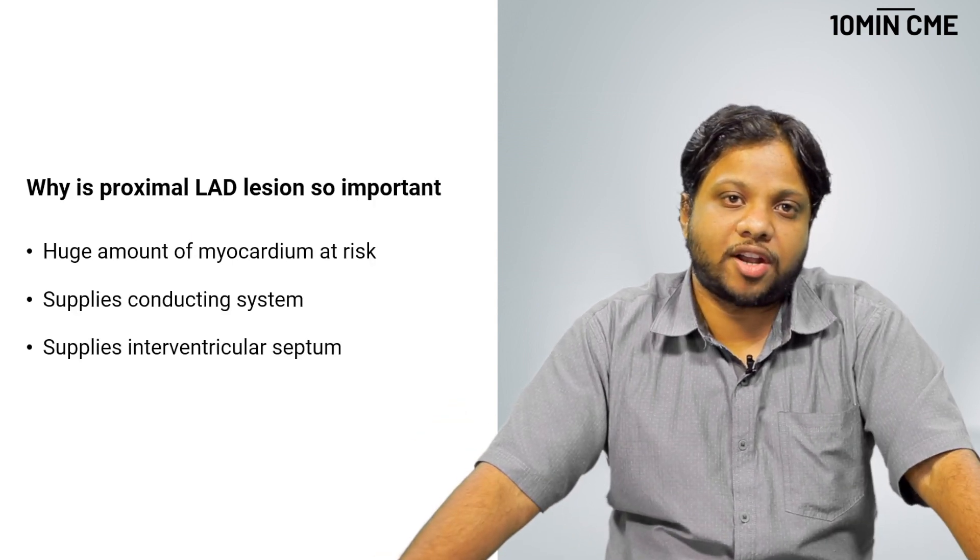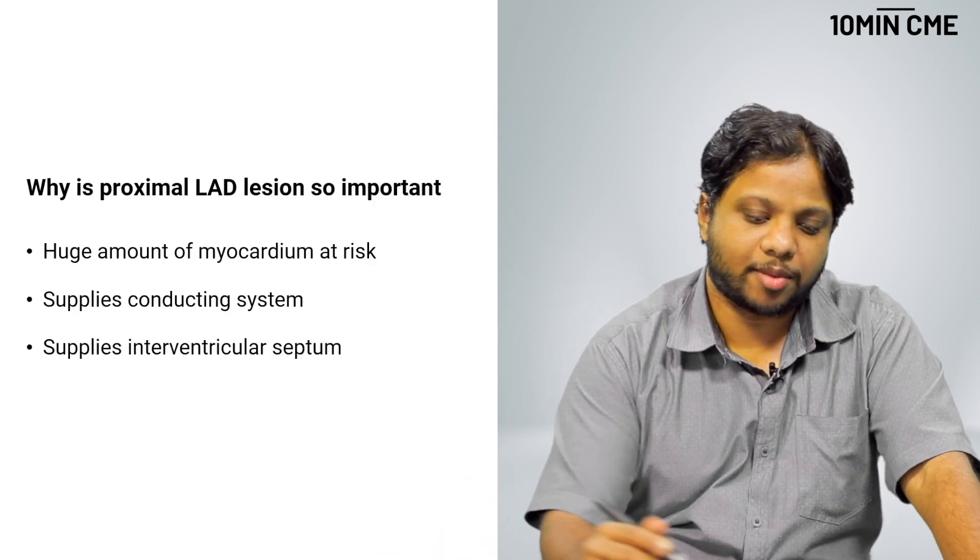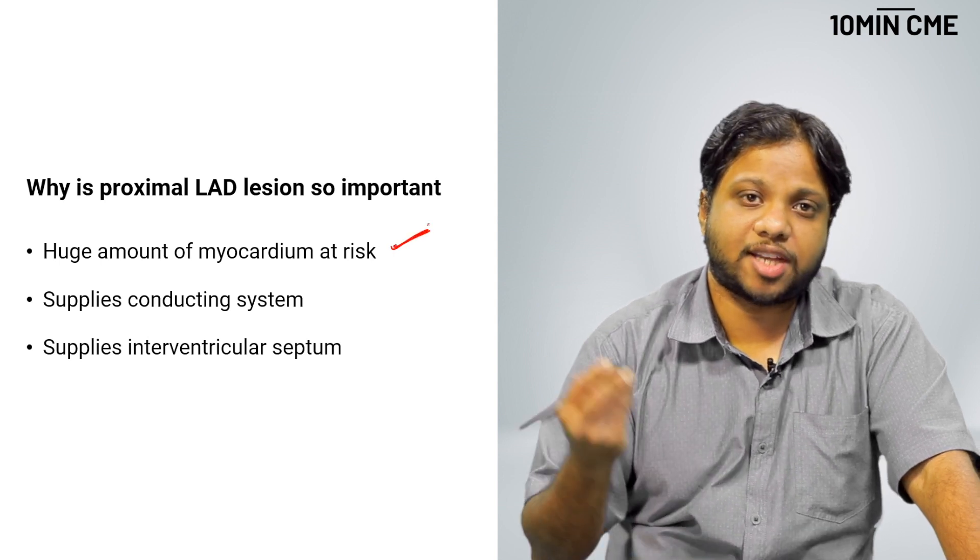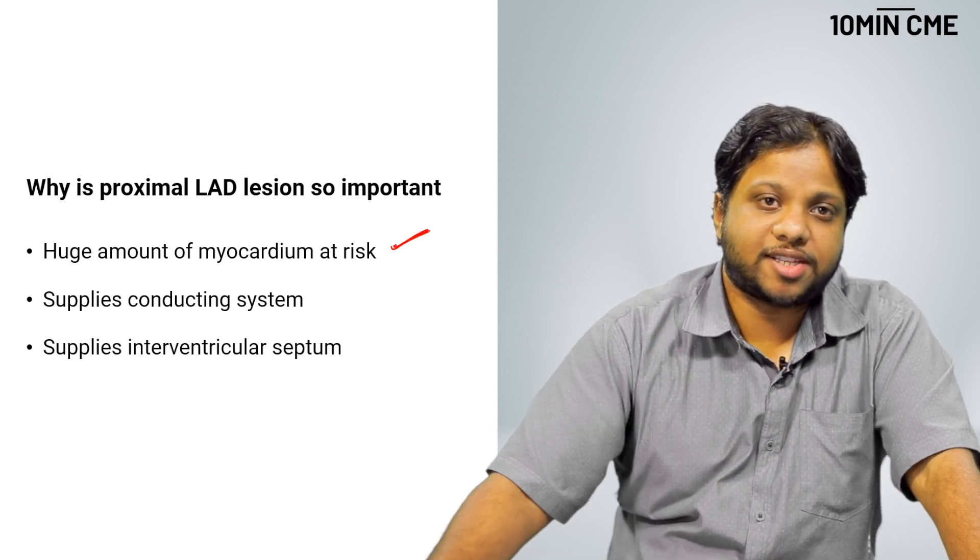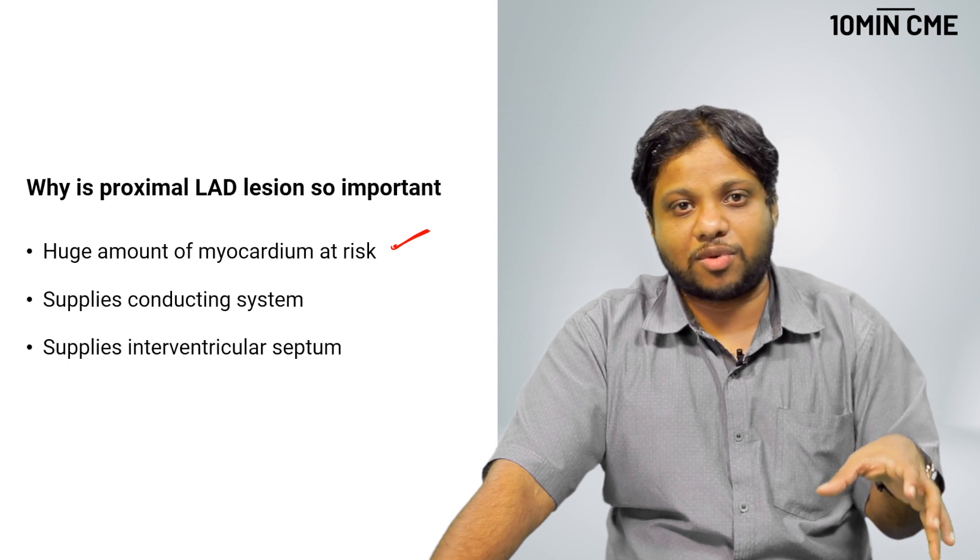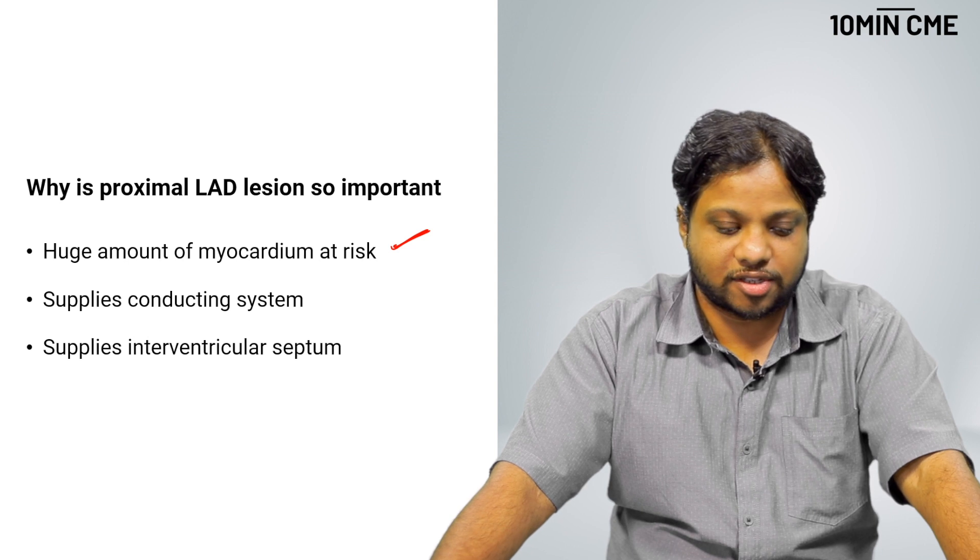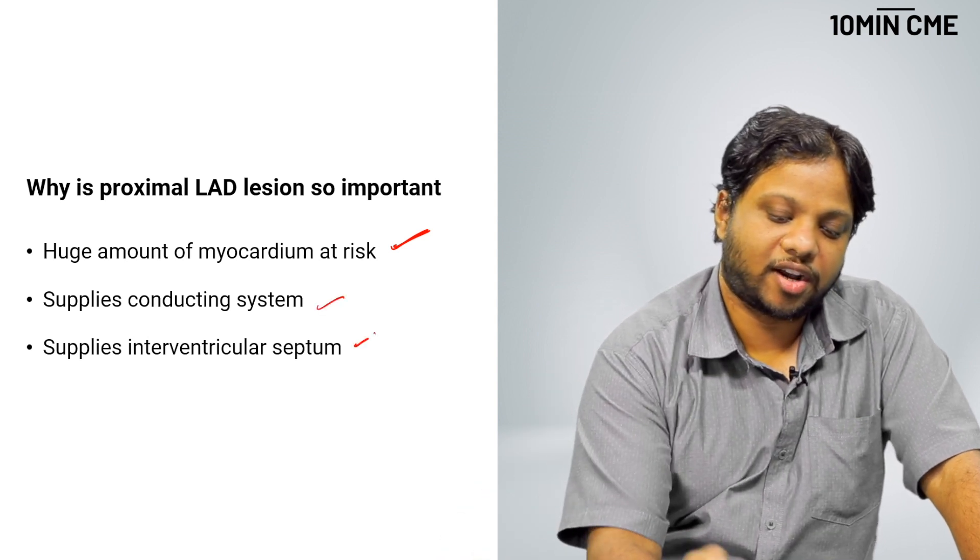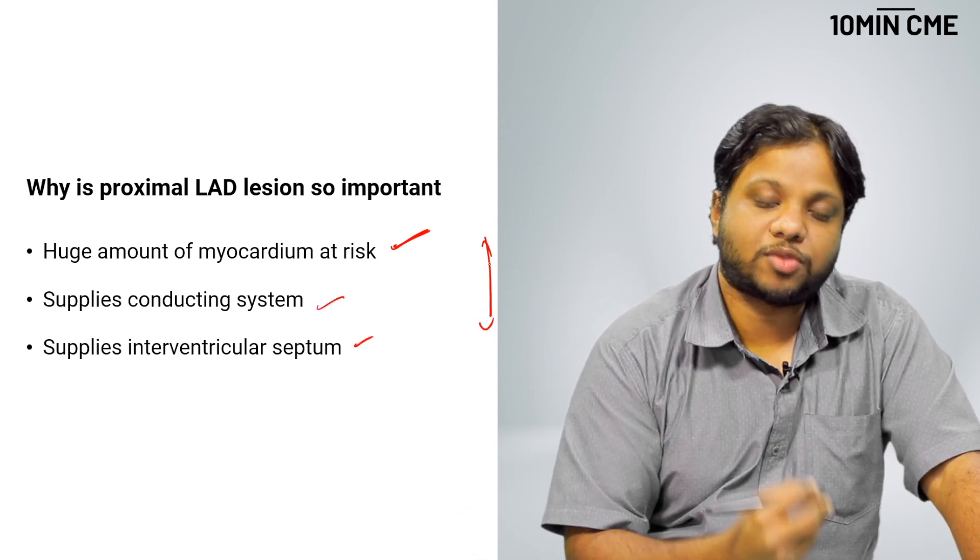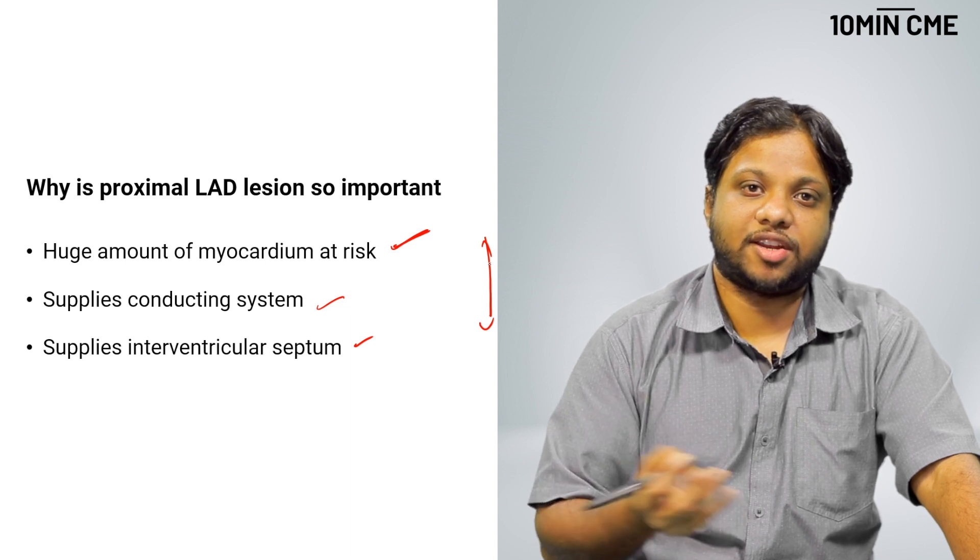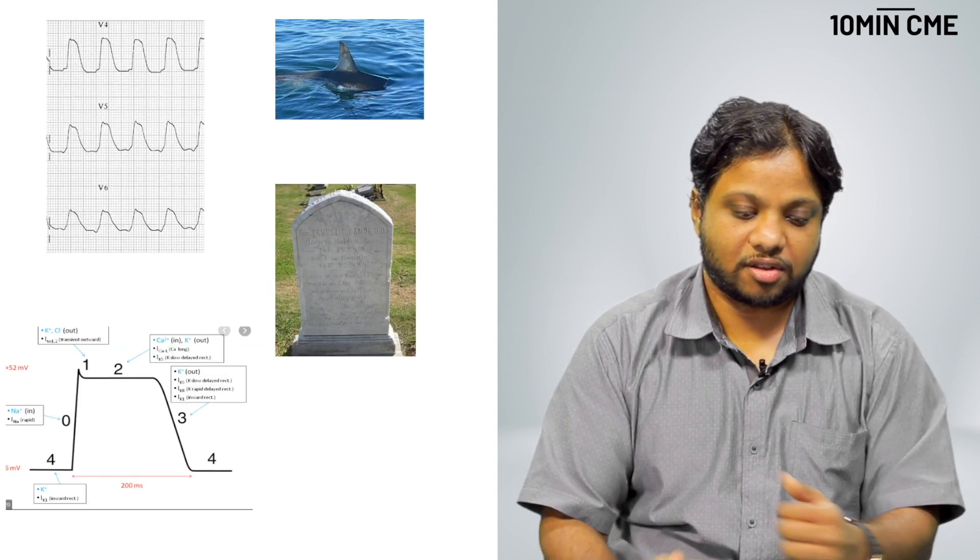Why is proximal LAD so important? A huge amount of myocardium is at risk. Myocardial jeopardy is much more. It supplies the conducting system. The LAD along with the right coronary artery is the one which supplies the conducting system. There is potential for heart blocks and it supplies the intraventricular septum. Very important. That is why proximal LAD lesion usually results in sicker patients.